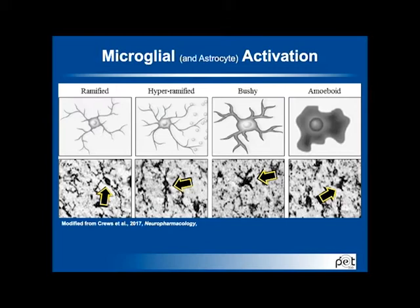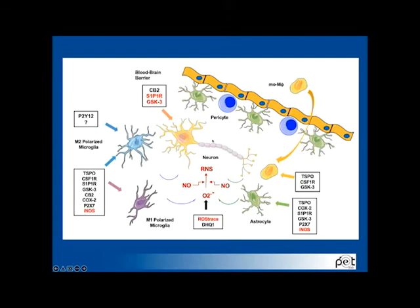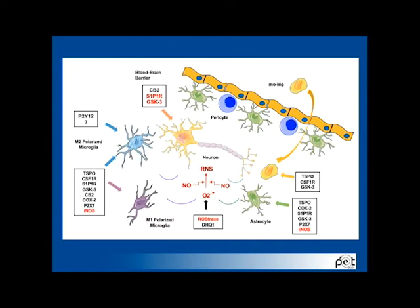This cartoon shows a bunch of different imaging targets we can use to image the immune system. In addition to microglia, there are also astrocytes, with a rapidly growing literature on their relevance to immune signaling processes. Regarding TSPO specifically, it's expressed primarily in microglia, but there's also expression in astrocytes and endothelial cells, and even some evidence of low expression in neurons. This multicellular expression of TSPO is the source of a lot of disagreement in the current literature as to what a TSPO signal means.